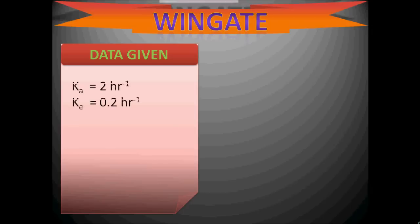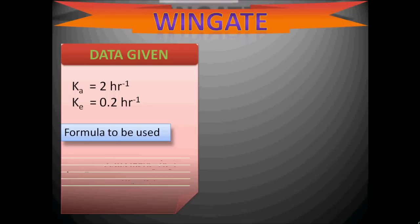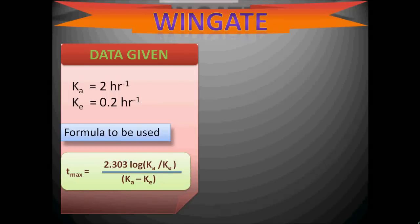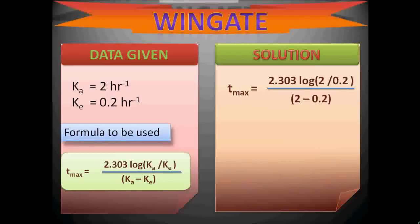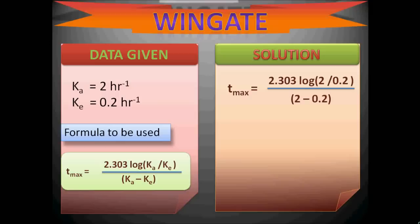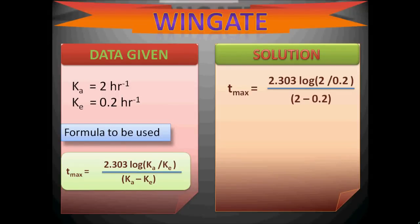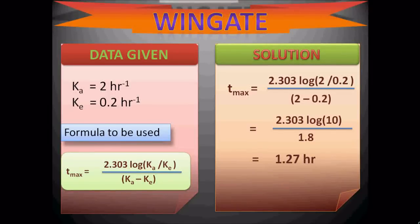The data given: Ka (absorption rate constant) = 2 hr⁻¹ and Ke (elimination rate constant) = 0.2 hr⁻¹. Using the formula Tmax = 2.303 × log(Ka/Ke) / (Ka − Ke), substituting gives 2.303 × log(2/0.2) / (2 − 0.2) = 2.303 × log(10) / 1.8 = 1.27 hr. The approximate value from the given options is 1.2 hr, so the answer is A.